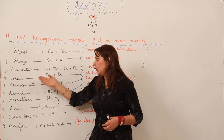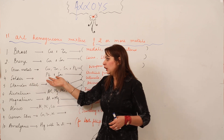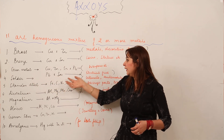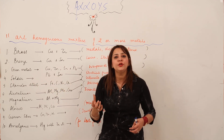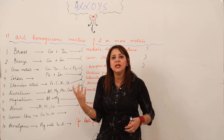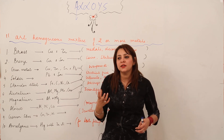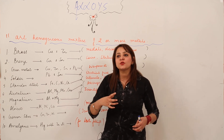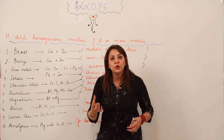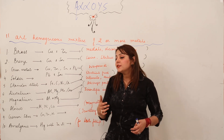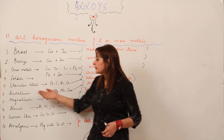Next is solder, an alloy of lead and tin. Solder is used for making electrical fuses used in houses to prevent fire, avoid short-circuiting, and prevent overloading.